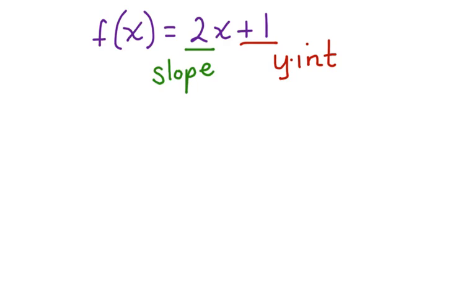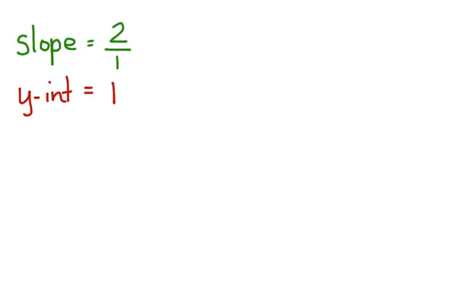Now we can actually graph this equation. The slope is 2 over 1 and the y-intercept is 1. Let's graph it on the coordinate grid.